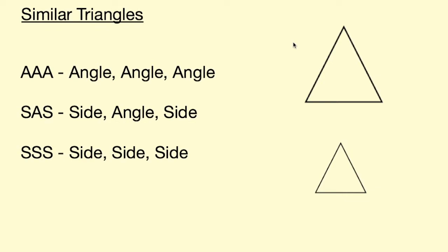There are three main tests you can use to prove that triangles are similar, and they are angle angle angle, side angle side, and side side side.